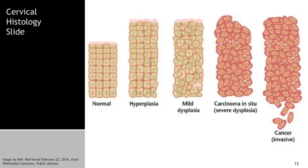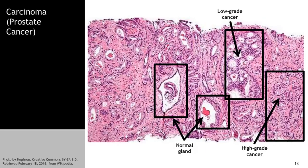Here's a histology slide of prostate cancer, or a carcinoma. Prostate cancer is an adenocarcinoma. In the slide, you can see large normal glands with an epithelial lining. As you develop low-grade cancer, the glands get smaller and bunched up. As the cancer gets worse and becomes high-grade, on the right-hand side you see you lose all the gland architecture and are left with just bunched up cells.